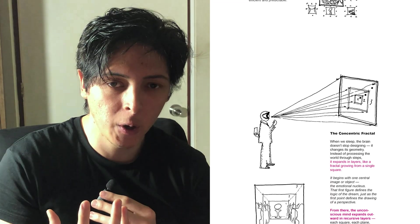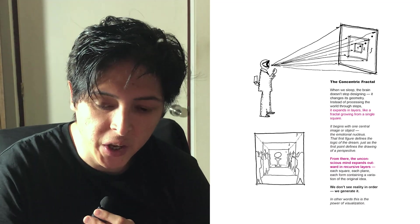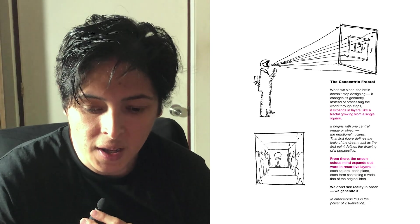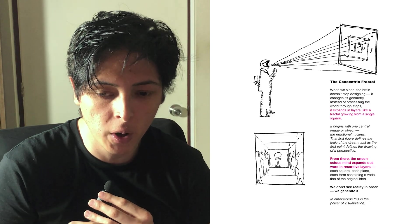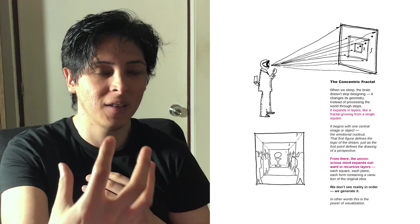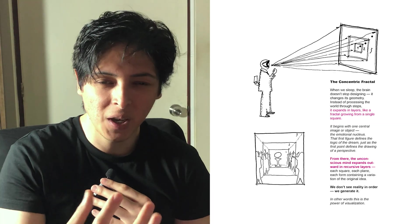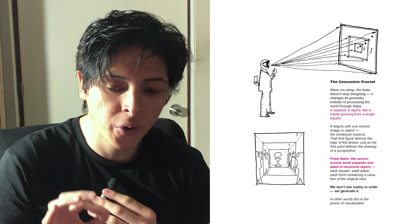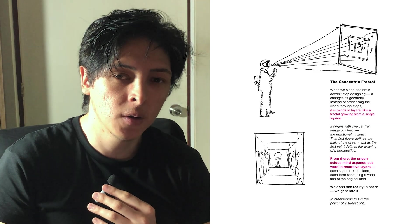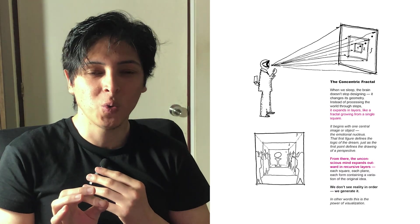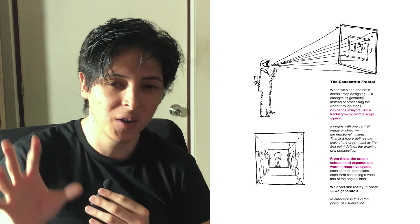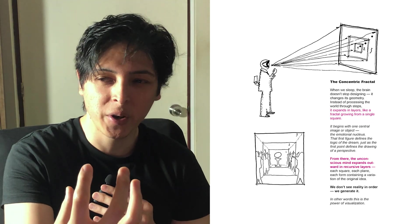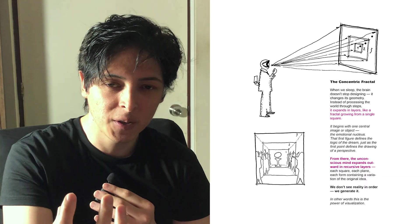This is how we decode when we are awake — but it's very different when you are sleeping. The concentric fractal: when we sleep, the brain doesn't stop designing. Instead of processing workflow steps or different frames, it expands in layers like a fractal growing from a single square — different layers of fractals at different scales. You have one frame and that frame can expand more and more. It begins with one central image or object — the emotional nucleus. That first figure defines the logic of the dream. When you are dreaming, you are thinking about one simple object, and that is the first frame of your mind.